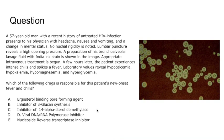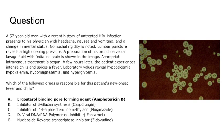Appropriate intravenous treatment has been begun. A few hours later, the patient experiences intense chills and spikes of fever. Laboratory values reveal hypocalcemia, hypokalemia, hypomagnesemia, and hyperglycemia. Which of the following drugs is responsible for the patient's new onset fever and chills? This is a classic question — instead of giving you the name of the drug, you have to know the mechanism. The answer is A: those are the side effects of amphotericin, an ergosterol-binding agent that forms pores and causes cells' contents to leak out.